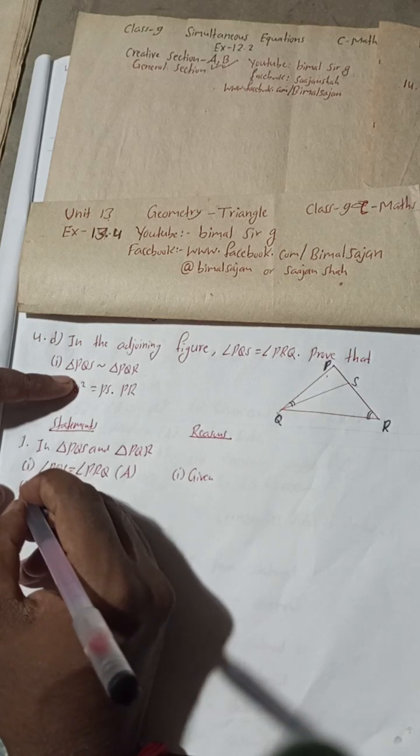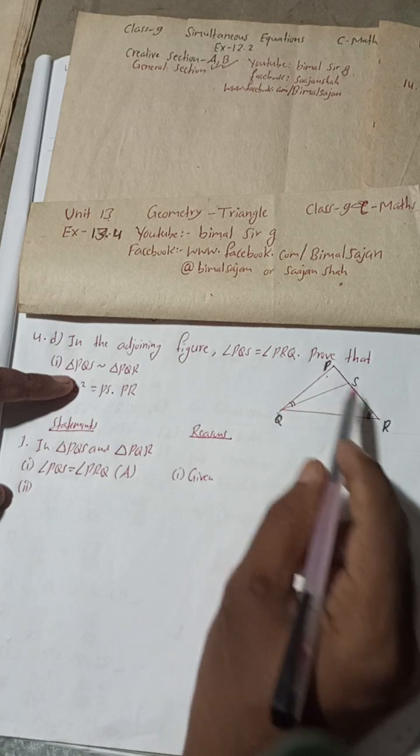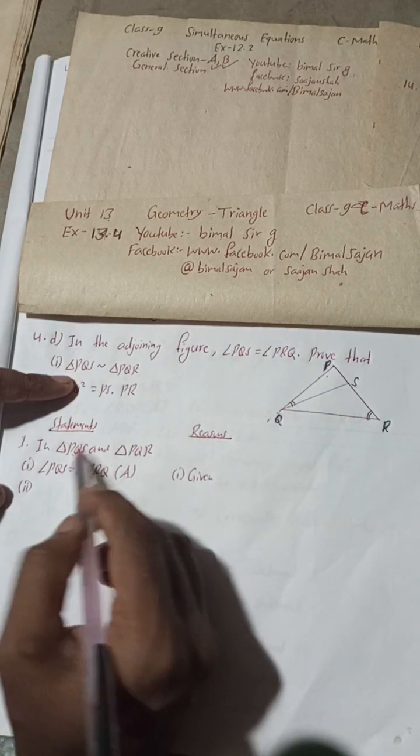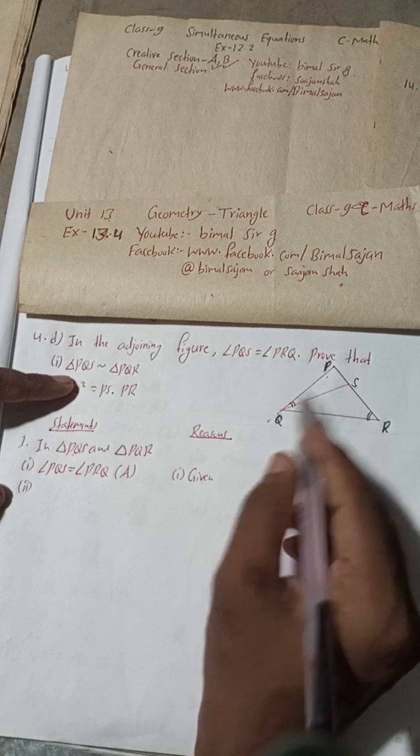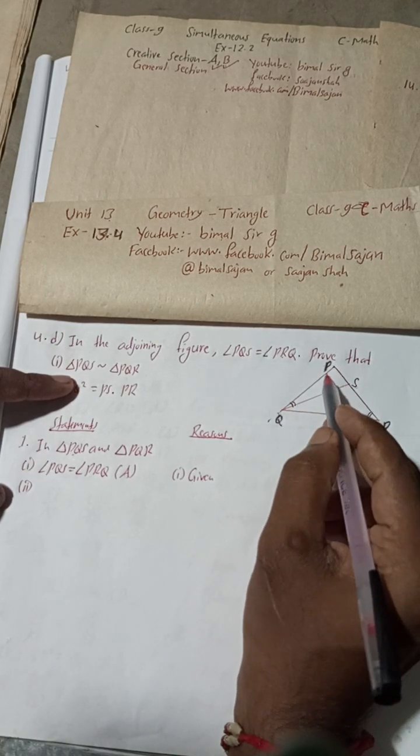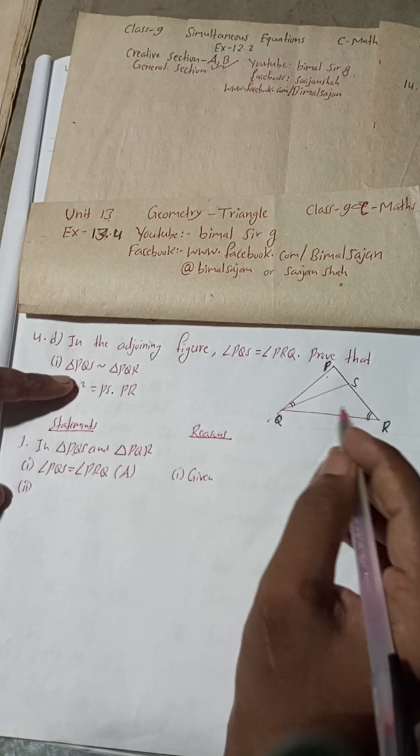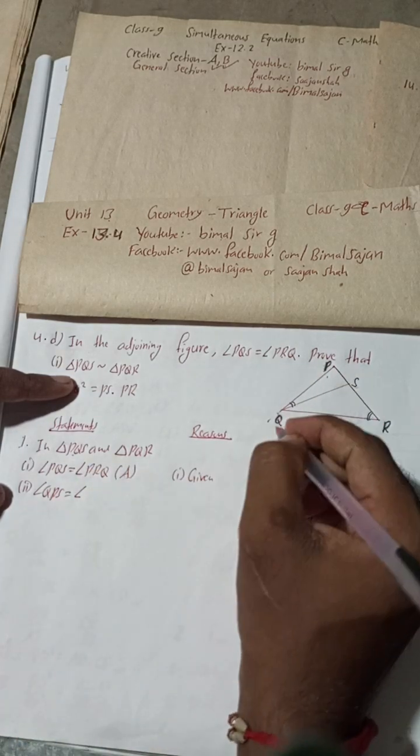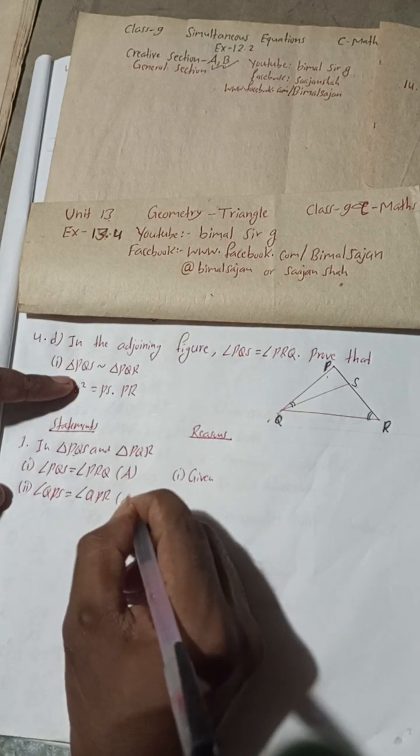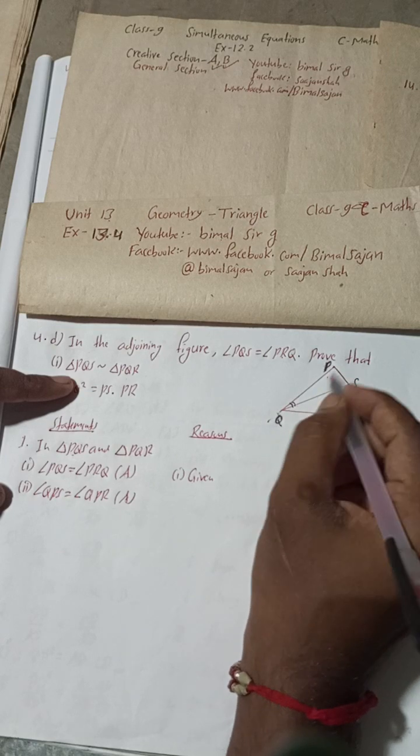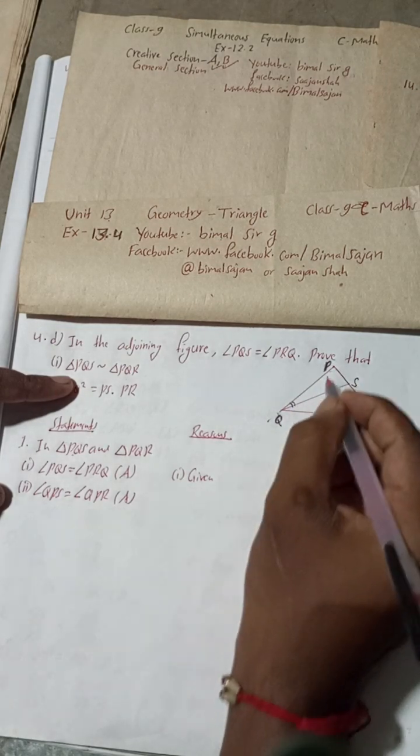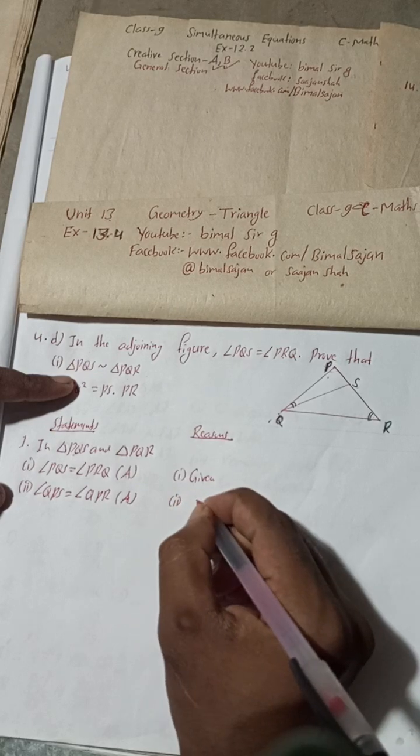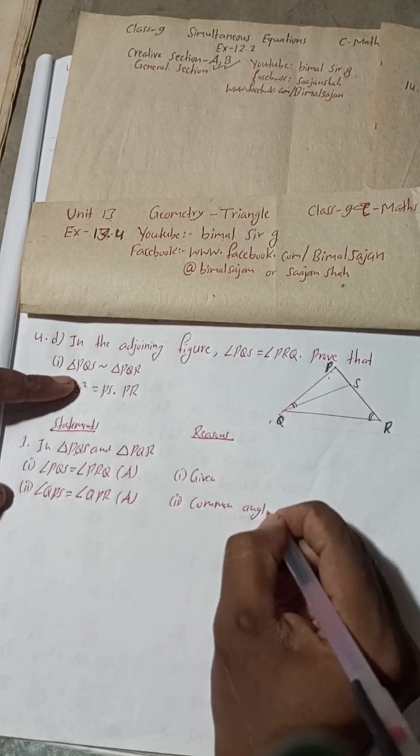Number two: angle QPS. This angle, I have taken this triangle PQS, the small triangle first. So first I showed this PQS, this angle. Now in this small triangle I am showing this angle QPS is equal to angle QPR in the bigger triangle. Why? Because this is the common angle for this small triangle and for the big triangle. So both are common angle, obviously it is equal. Reason: common angle.